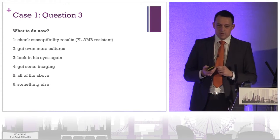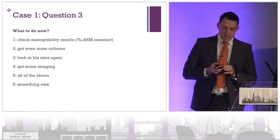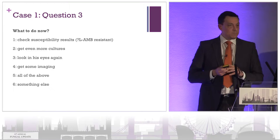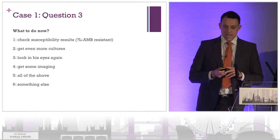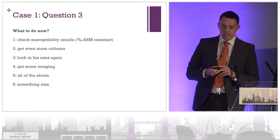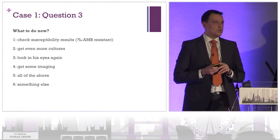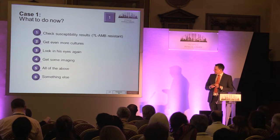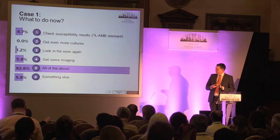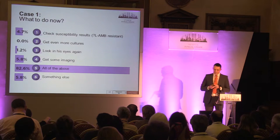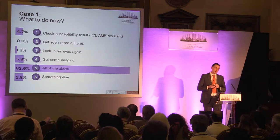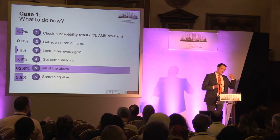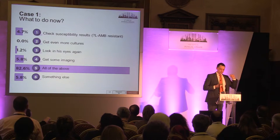So what would you do now? Would you ask about the susceptibility testing results? Would you get more cultures? Would you look in his eyes again? Would you get some imaging? Would you do all of the above, or something else? Someone suggested changing the therapy — he's got a fever despite being on AmBisome. Have we got something resistant? Should we change his treatment? That's a reasonable suggestion.